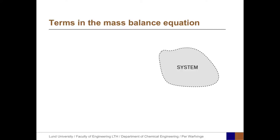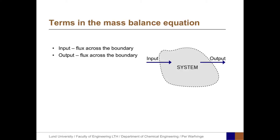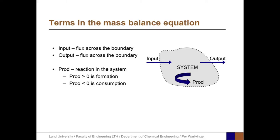The terms in the mass balance equation are the following. One is the input term — the flux across the boundary from the surrounding into the system. Another is the output term, representing the flux across the boundary from the system to the surrounding. A third is the production term, which represents reactions that take place in the system.